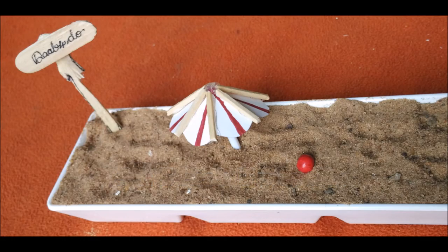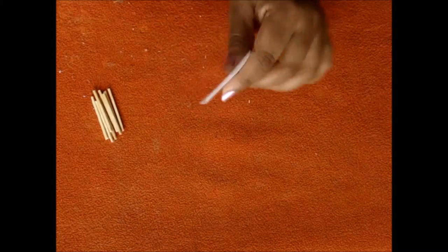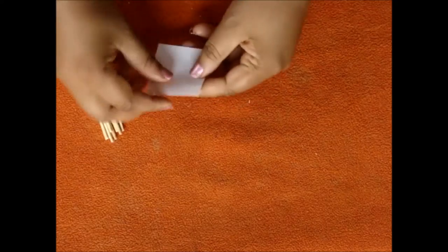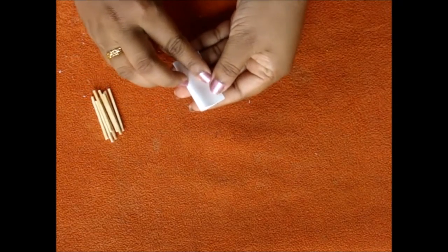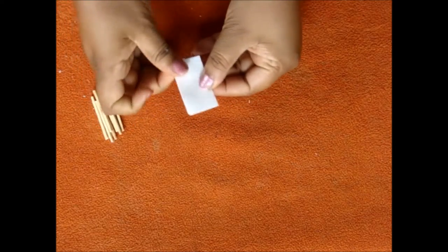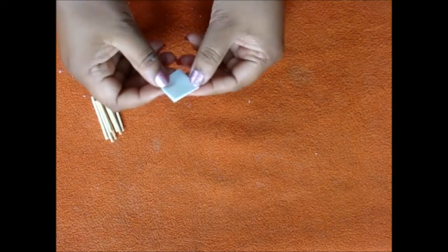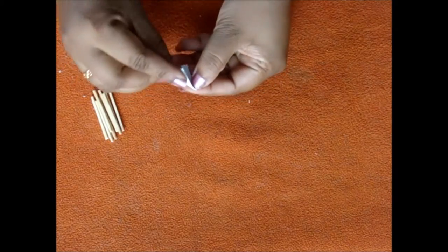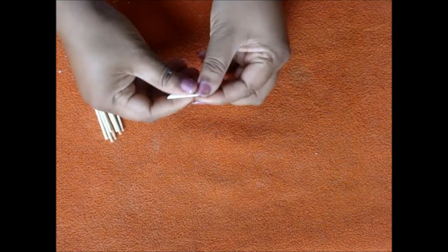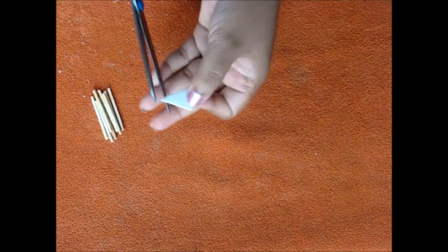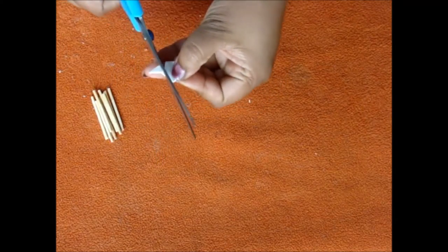Beach umbrella. For this take a square paper which measures five into five centimeters. Make it in half. Fold the rectangle again in half. And then a triangle. Now with the help of scissor make a curved edge.